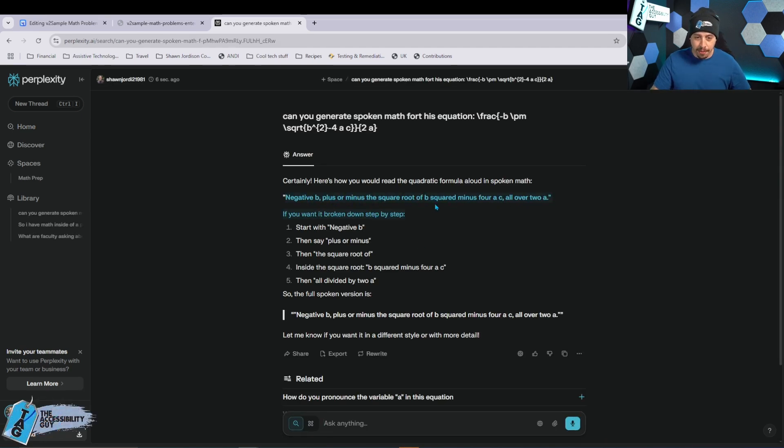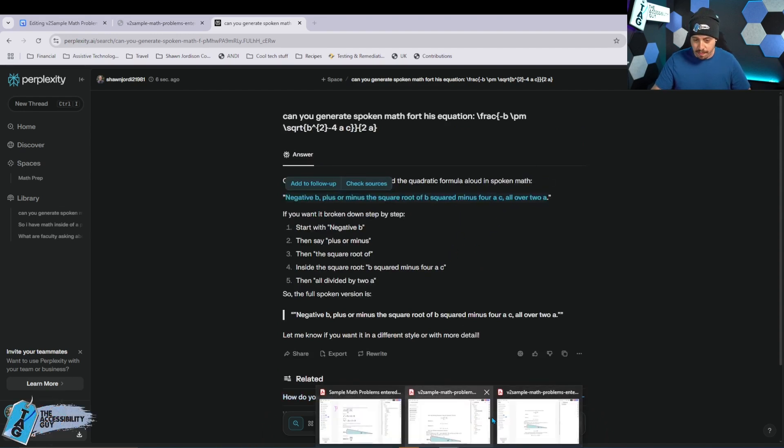And right here we have negative B plus or minus the square root of B squared minus 4AC all over 2A. This isn't like perfect, but it's something. So let's launch back into the PDF.